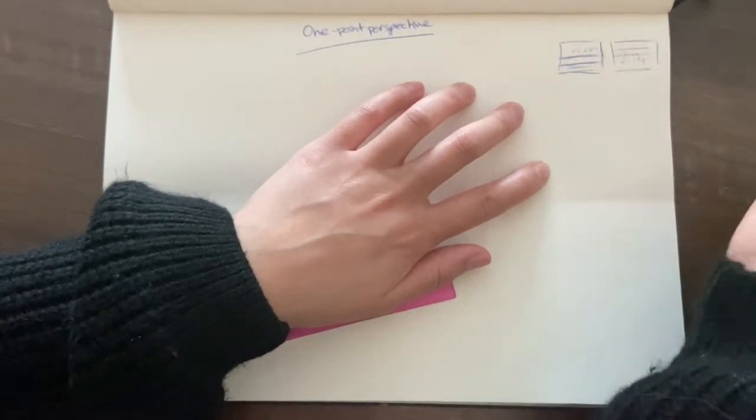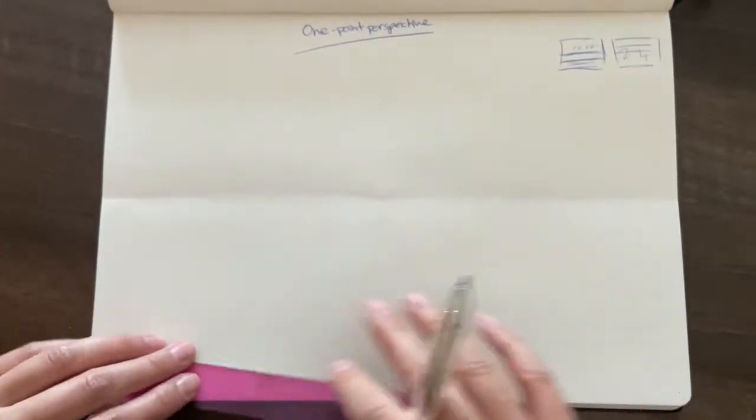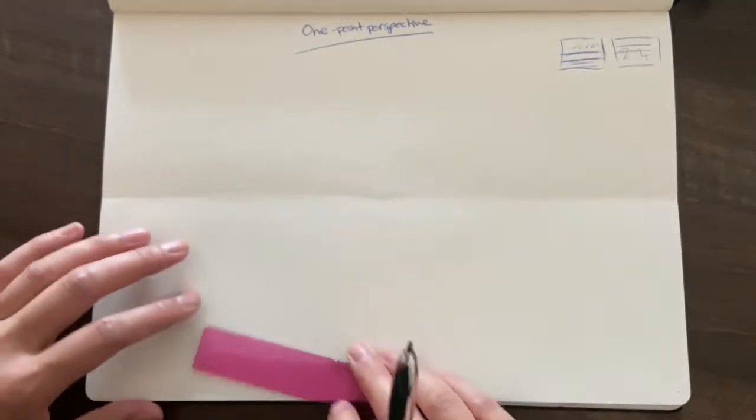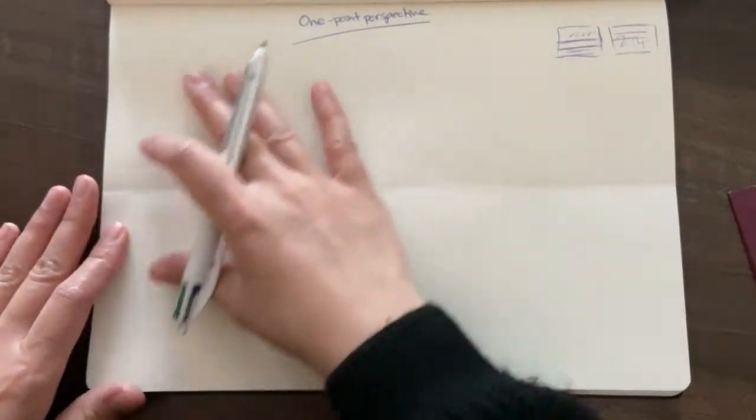So that really depends on your point of view. So today, you're going to place your horizon line just down the middle of your page. Make sure your page is in a landscape orientation.